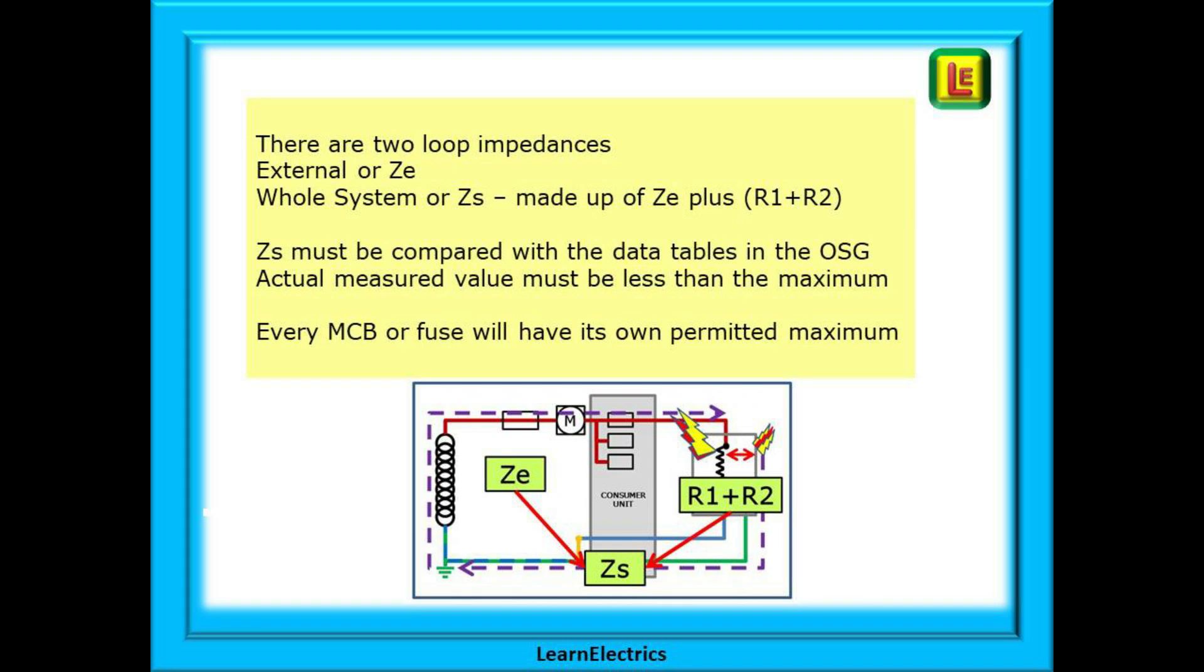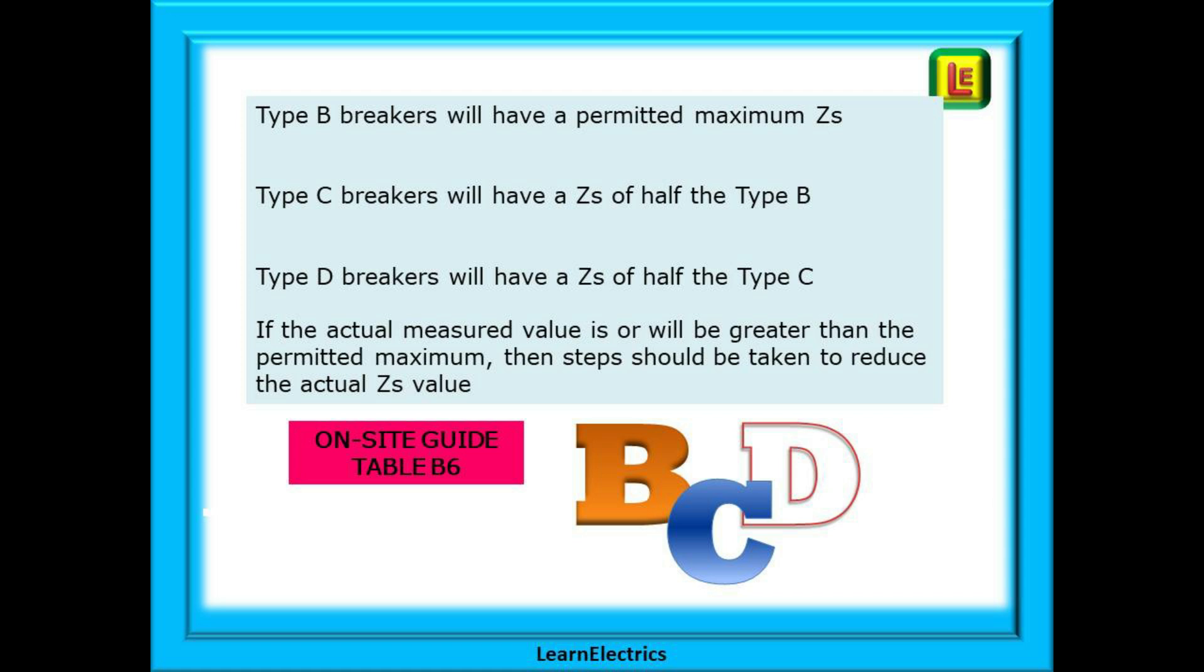There are two loop impedances. All the external parts called ZE the external loop impedance and the whole system is called ZS the system loop impedance and this is made up of ZE plus R1 plus R2. ZS must be compared with the data tables in the on-site guide to ensure compliance with the requirements for safety and protection from electric shock. The actual measured value must be less than the maximum permitted value in the on-site guide and every MCB or fuse rating and type will have its own permitted maximum values. There are three types of BS EN 60898 circuit breakers and there is an easy to understand relationship between types and ZS. Type B breakers will have a permitted maximum ZS as shown in the on-site guide table B6. Type C breakers will have a ZS of half the type B value and type D breakers will have a ZS of half the type C numbers.